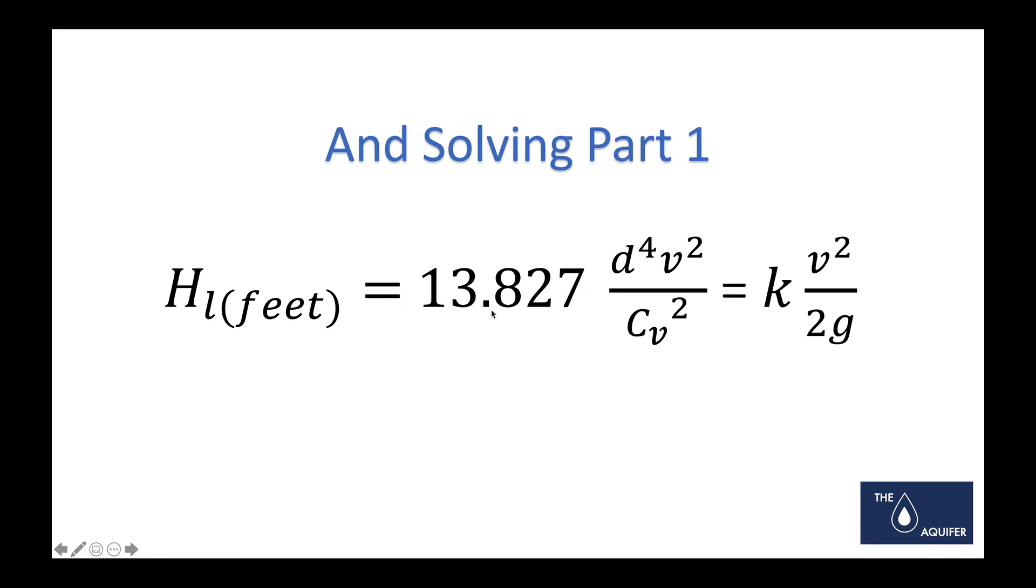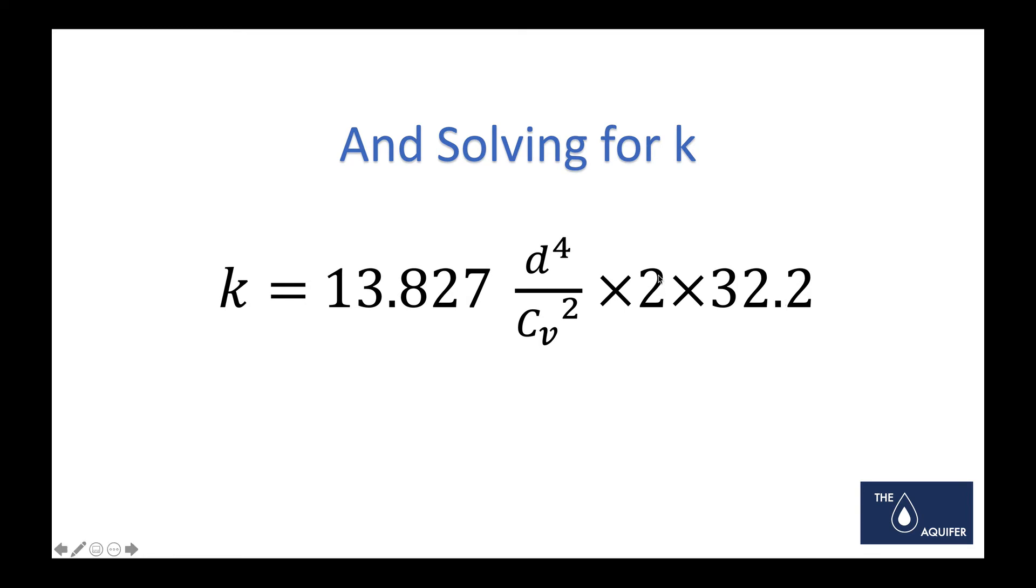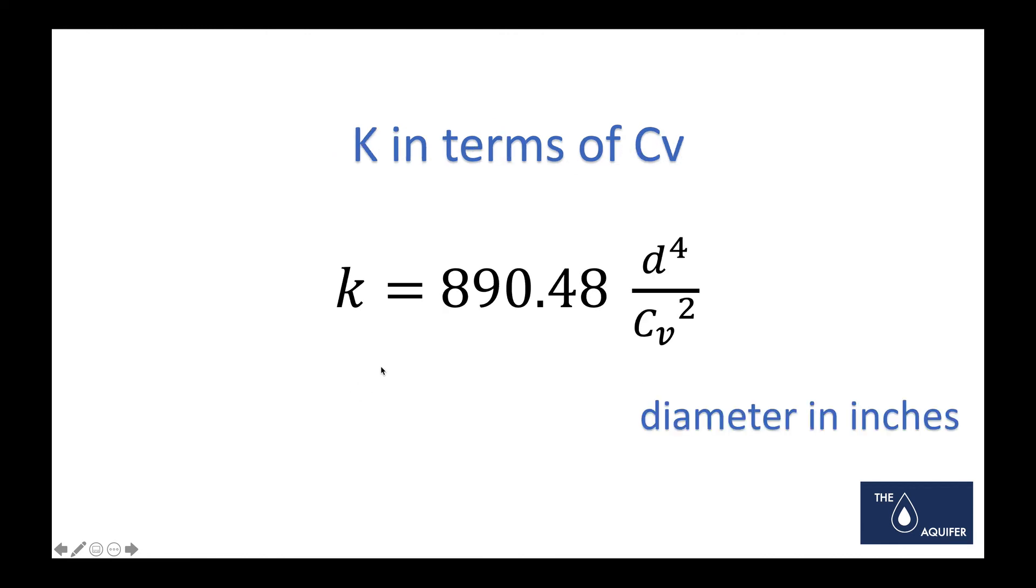Simplifying this, we know that the head loss is also equal to K times V squared over 2g—Darcy-Weisbach. So then we can do another reduction of this equation, flipping the gravity constant and the two to the right side of the equation and solving for K. We get that the K value is equal to 890.48 times the diameter to the fourth power in inches divided by the Cv squared.